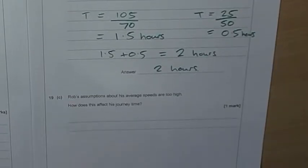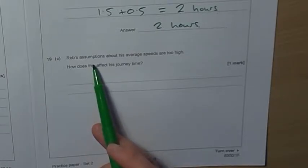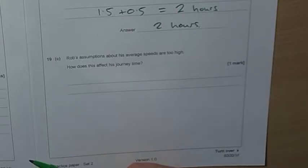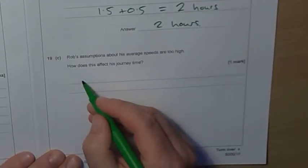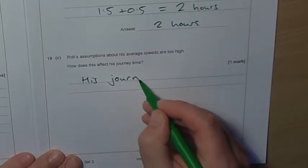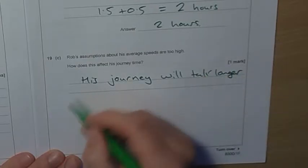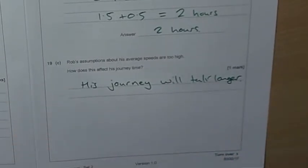Part C. Rob's assumptions about his average speeds are too high. How does this affect his journey time? Well, if his assumptions are too high for his journey time, it means that he's going too fast. If you're going too fast, that will actually make your journey quicker. So if his assumptions are too high, his journey will be slower. We want to put his journey will take longer, or we could say would be slower, something to those effects.